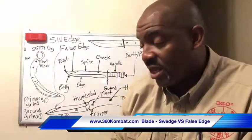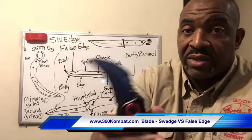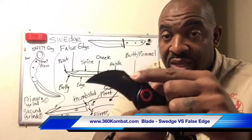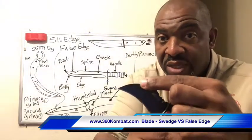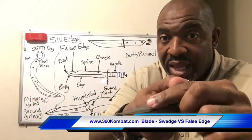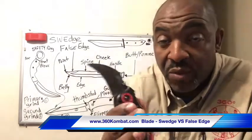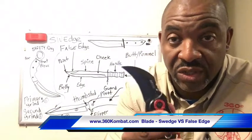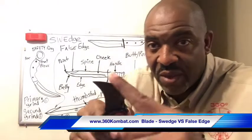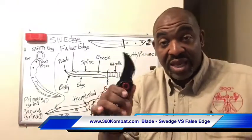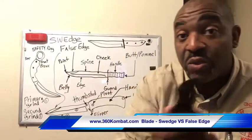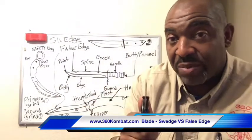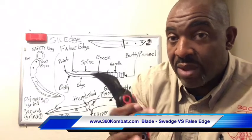Let's look at another blade to get a deeper understanding of the swedge or false edge. This karambit knife — see the spine of the karambit. It has a beveled edge here. Would this be considered a false edge or a swedge? This would be considered a swedge because I cannot cut myself on it. Once again, it's used for enhancing balance, reducing weight, and enhancing penetration capabilities.